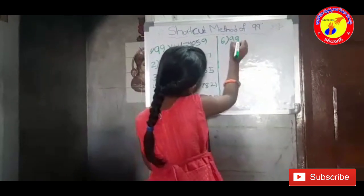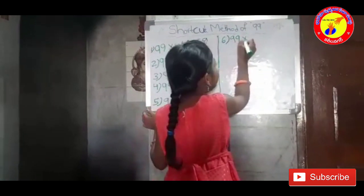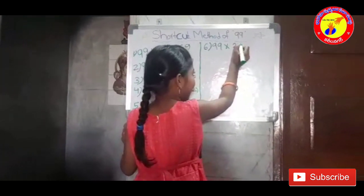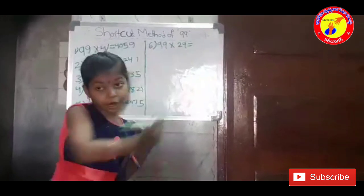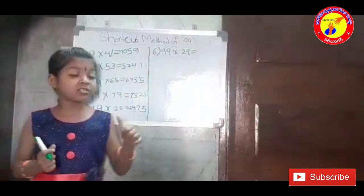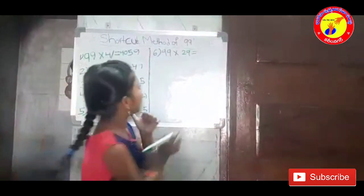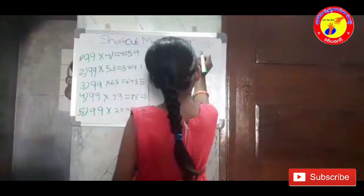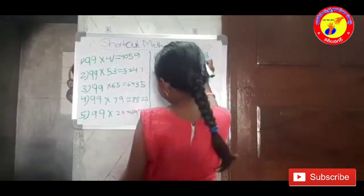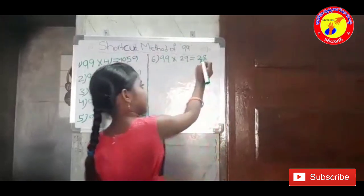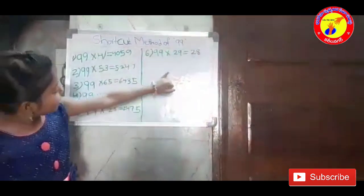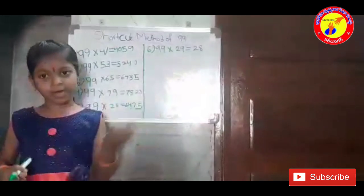99 into 29. In 29, subtract 1 — what number will come? It is 28. In 2, what number means 9 will come?